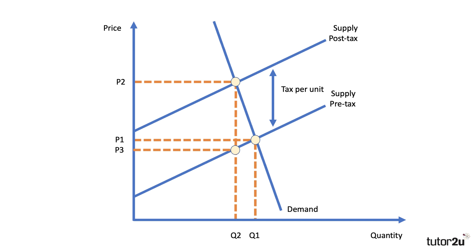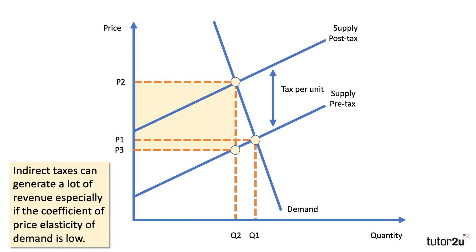In this diagram, we've got a fairly price-inelastic demand curve and the tax has caused the price to rise from P1 to P2. The total tax is P2 to P3, so there's quite a significant chunk of revenue. Indirect taxes can actually generate a lot of tax receipts, especially if demand for a good or service is relatively price inelastic — a low coefficient of price elasticity of demand. That yellow area is quite a big chunk of tax revenue. Think of the duty on fuel, where something like 60p per litre of diesel is tax. So when you're filling your car up with petrol or diesel, you're also filling the government's tax revenue coffers. Interestingly, as we shift towards electric cars, the government may well lose quite a bit of that tax revenue.